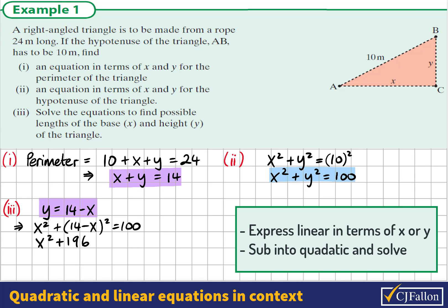14 squared is 196. Multiply 14 by negative x and double it, it's negative 28x. And negative x squared is positive x squared. We see now we have two x squareds and negative 28x.